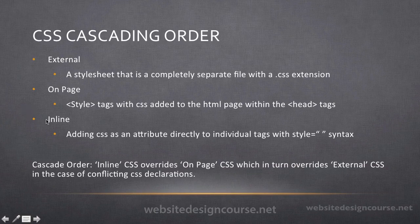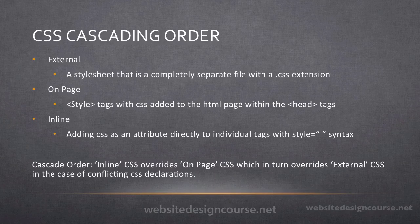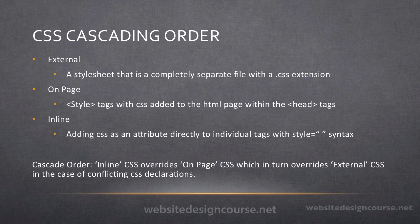For example, if you have an inline CSS rule turning the color of a paragraph red, and you also have an external CSS rule saying the paragraph color should be blue, there's a conflict — which one wins? According to cascading order, inline would trump, so the paragraph would be red. This gets more complicated when we start talking about specificity, but we'll cover that in a later video tutorial.